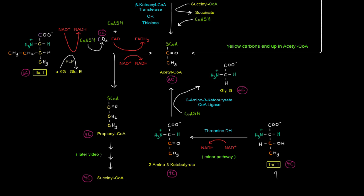The last one here is threonine. And we actually saw this in the previous video. In the minor pathway, threonine is turned into 2-amino-3-ketobutyrate in the threonine dehydrogenase reaction. And that 2-amino-3-ketobutyrate, these two carbons end up in acetyl-CoA after that coenzyme A is attached.